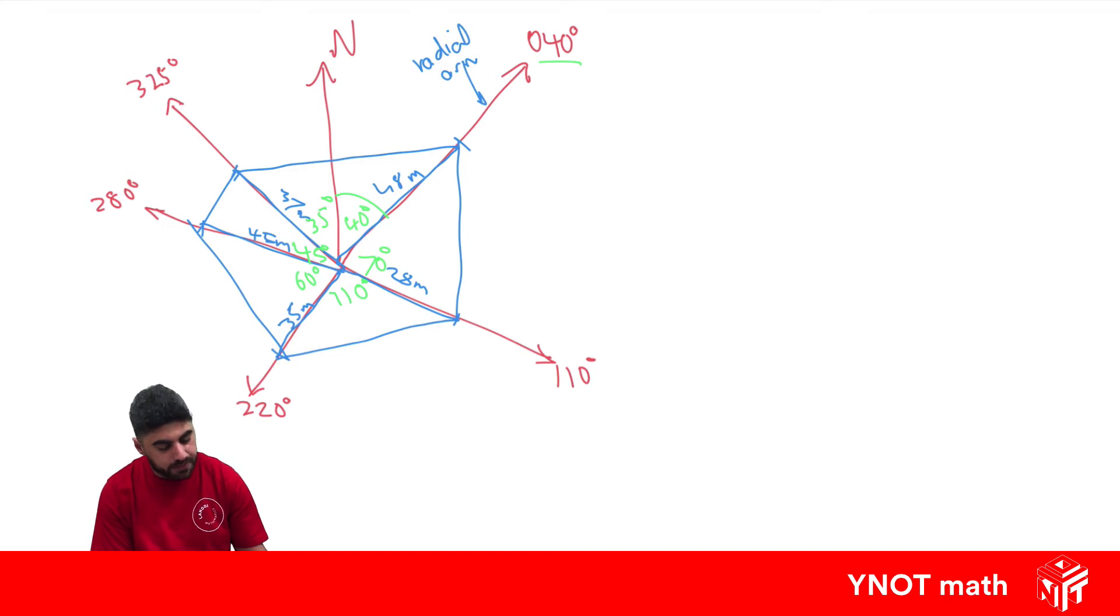And from here we can now answer any question they give us using either cosine rule, sine rule, or area of a triangle. So just to be able to do that, we might just label a couple of these points: A, B, C, D, and E. So we might get a question like find the length of EA.